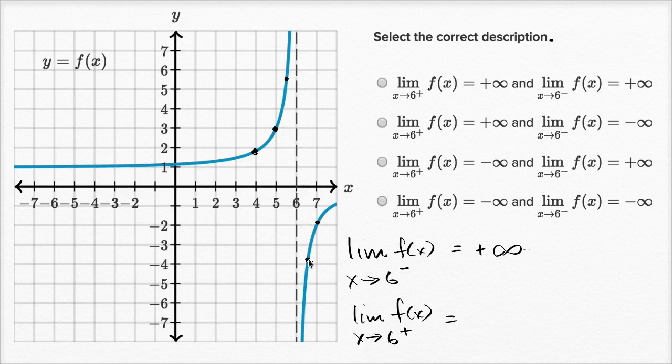f of 6.5 is even more negative. f of 6.1 is even way more negative than that. f of 6.01 would be even more negative than that. So it looks like this is unbounded in the negative direction. So this is negative infinity.